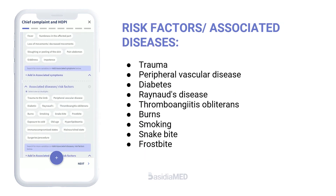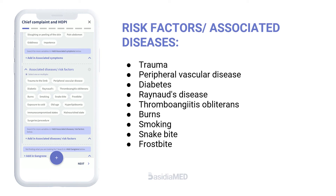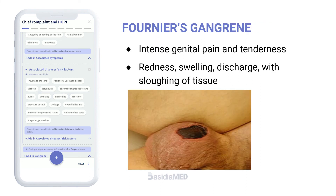Risk factors for gangrene include trauma, peripheral vascular disease, diabetes, Raynaud's disease, thromboangiitis obliterans, burns, smoking, snake bite, and frostbite. Other specific types of gangrene include Fournier's gangrene, Noma, and symmetrical peripheral gangrene.